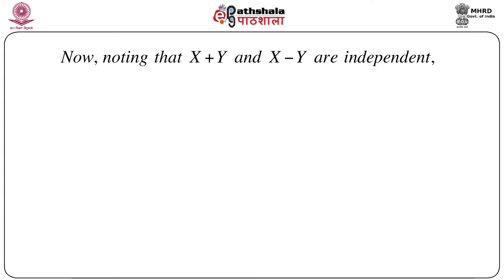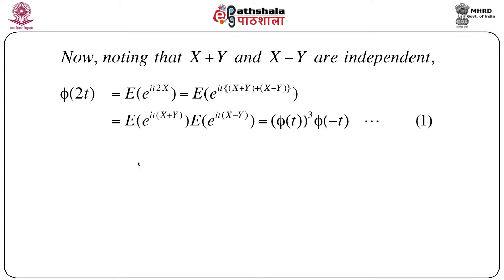Now we use the given condition that X+Y and X-Y are independent. Starting with φ(2t): φ(2t) = E[e^{i·2t·X}] = E[e^{it(X+Y)} · e^{it(X-Y)}]. Since X+Y and X-Y are independent, this equals E[e^{it(X+Y)}] · E[e^{it(X-Y)}] = φ(t)^2 · φ(t)·φ(-t) = φ(t)^3 · φ(-t). Call this equation 1.